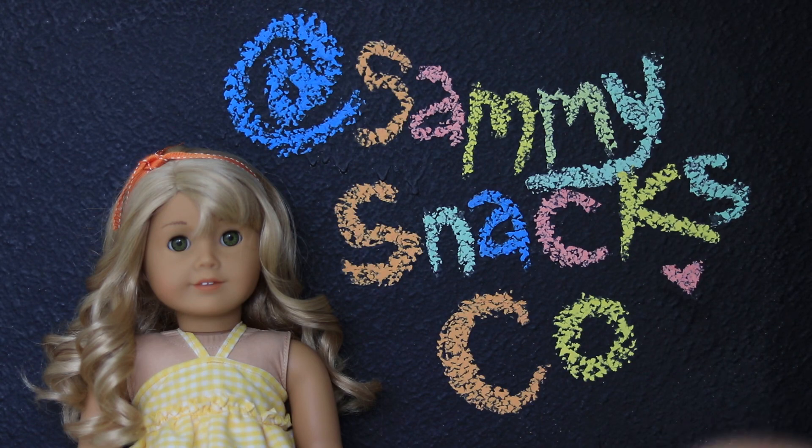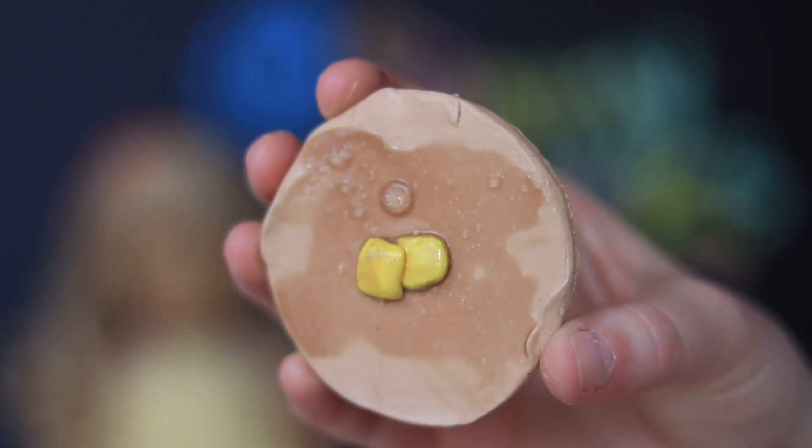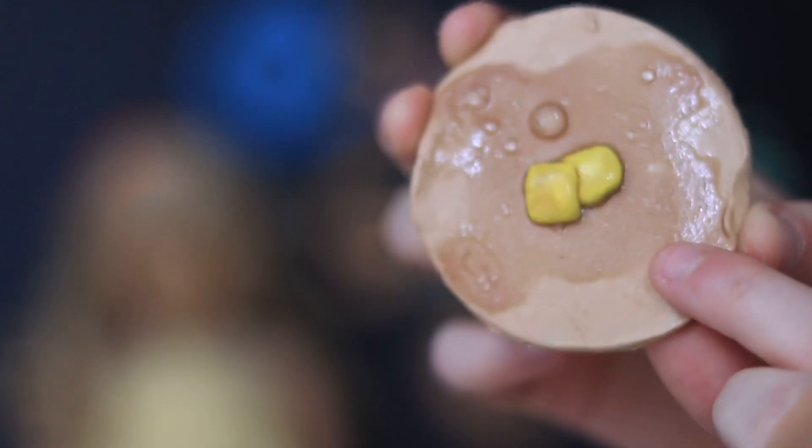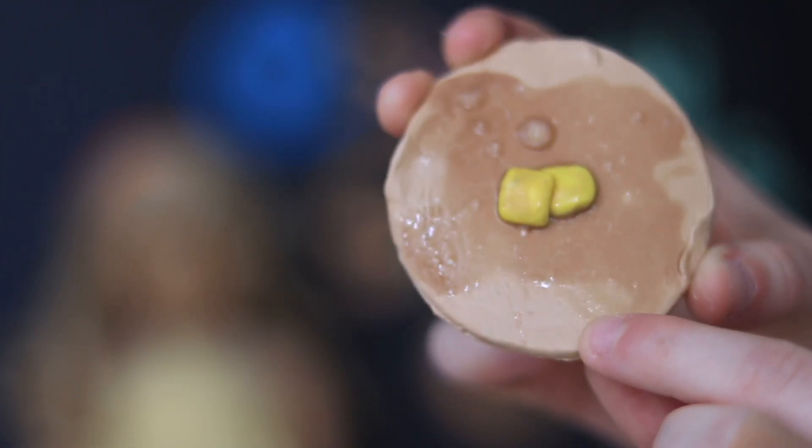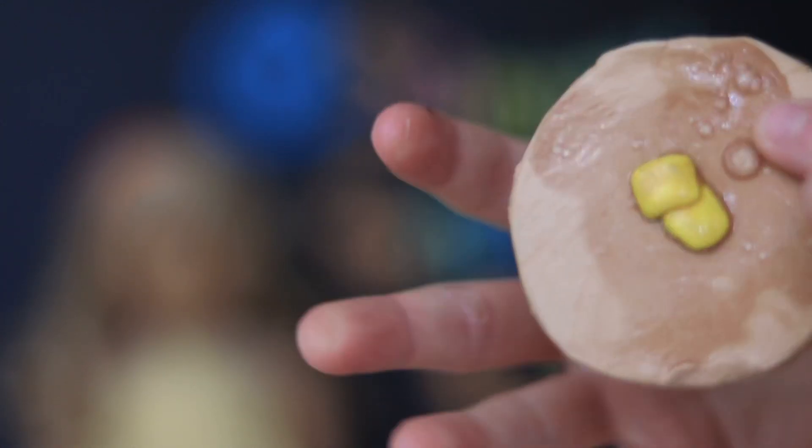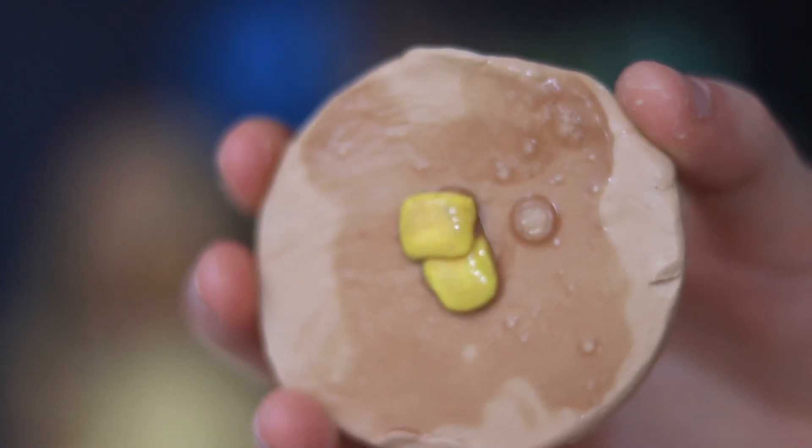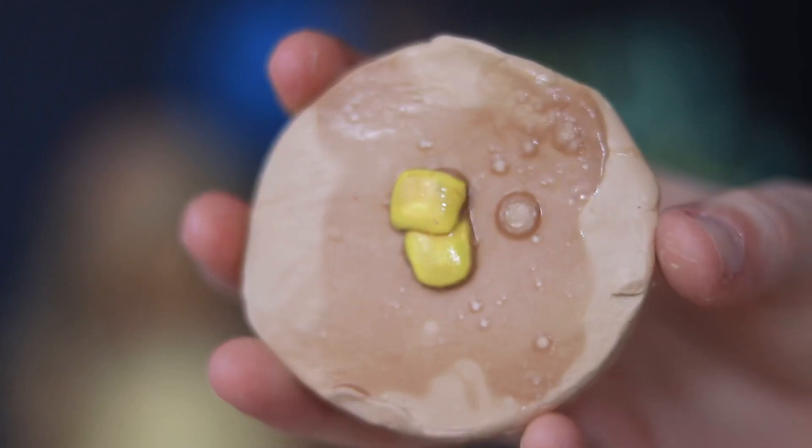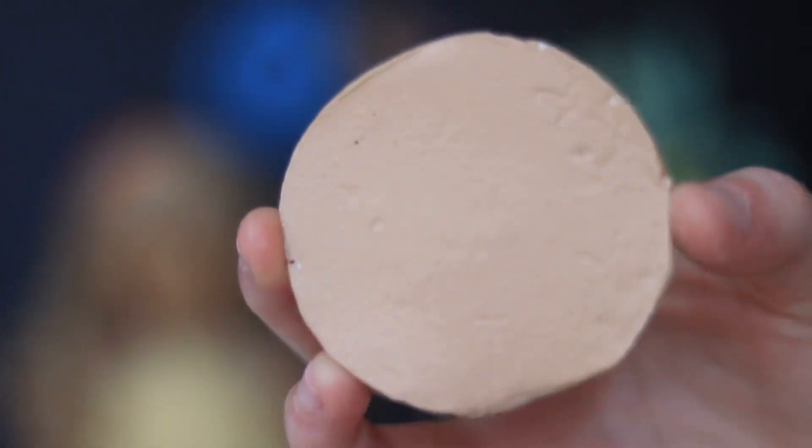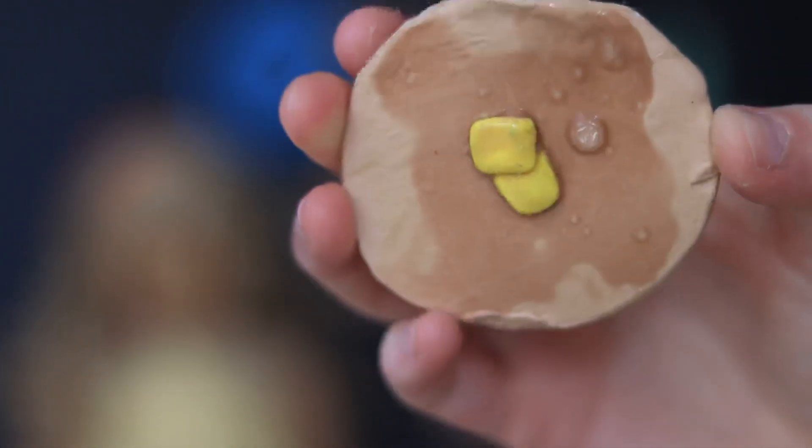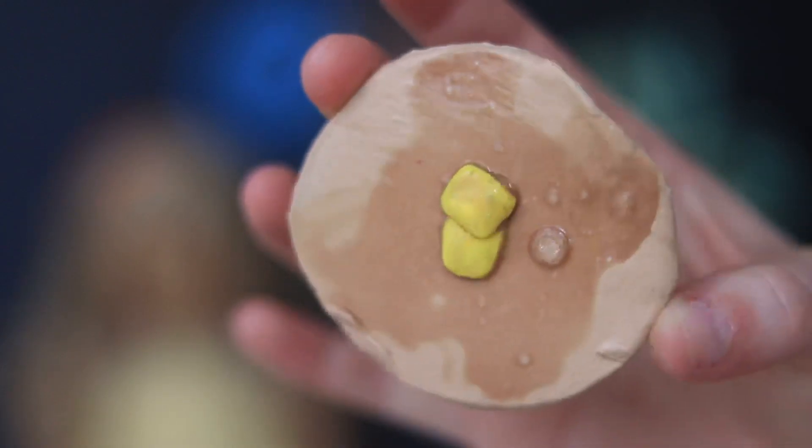So first up is this really cute doll pancake. Isn't that adorable? It has butter on it and really realistic syrup. Even like there's kind of like a crystallization on it, kind of like how syrup gets crystal-y on the bottle. I thought that was really cool. So if your dolls need some breakfast food, hit Sammy's Etsy shop up.